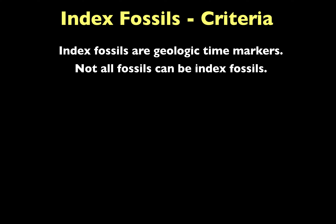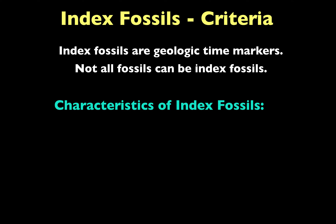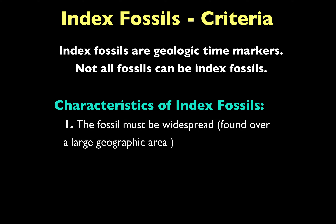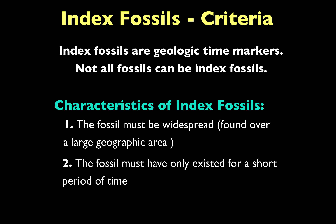To be an index fossil, you need to have two specific characteristics. The first characteristic is the fossil must be widespread — that means it needs to be found over a large geographic area. Second, the fossil must only have existed for a short period of time in Earth's history.